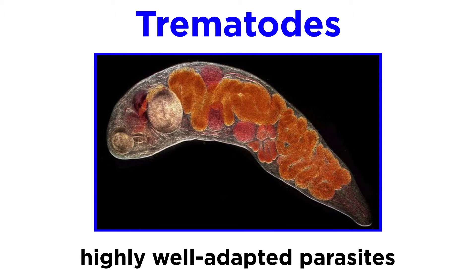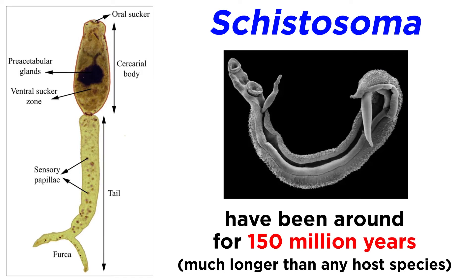Trematodes are such well-adapted parasites that some of them have existed for longer than their hosts. For example, the members of genus Schistosoma have been dedicated parasites for at least 150 million years, which is several orders of magnitude older than the evolutionary history of many of their current definitive and intermediate host species, including humans.